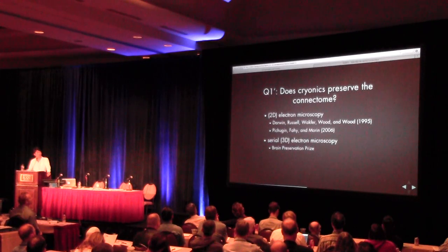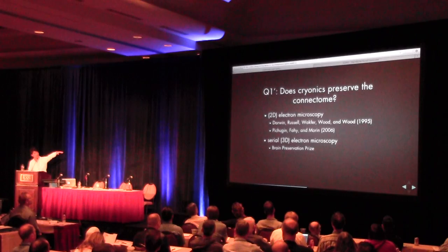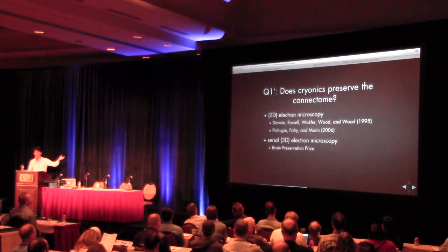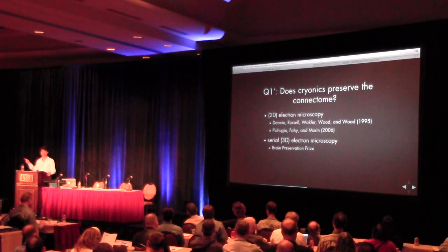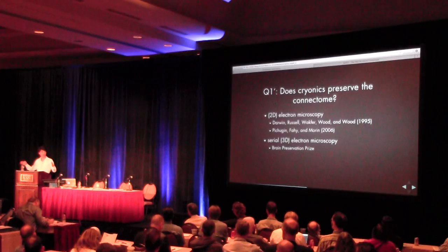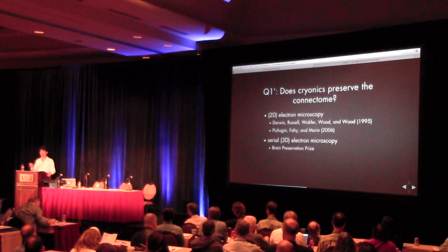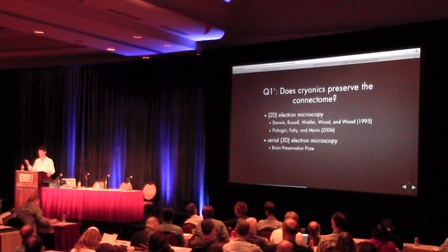If this is true, then clearly it's important to ask: does cryonics preserve the connectome? We've seen some 2D electron micrographs today — Darwin et al. and Pichugin et al. — showing what cryopreserved samples look like. But we need to go beyond that to 3D electron microscopy. Ken is going to discuss the Brain Preservation Prize, which is a challenge for any group to demonstrate preservation of the connectome by some brain preservation method.